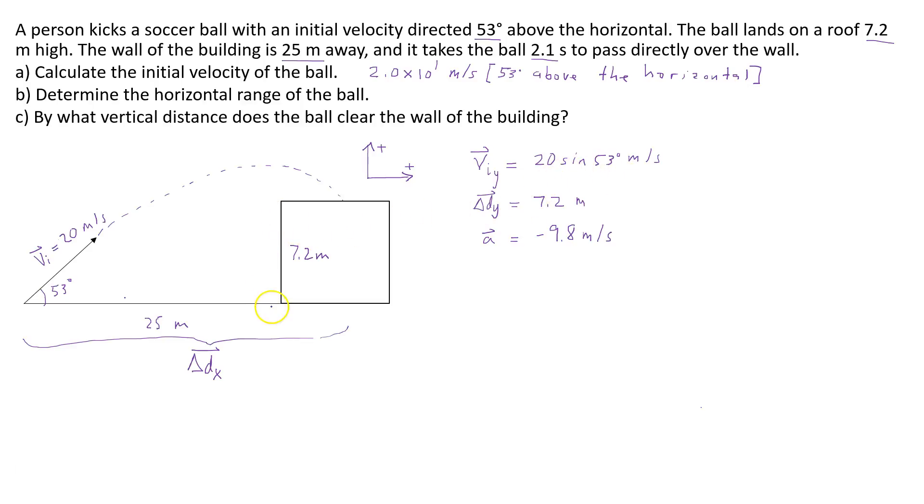So the initial vertical velocity is positive. The displacement is also positive because it goes from being at a position of 0 to being at a position of 7.2 above the ground. But the acceleration since it's directed towards the ground will have a negative value.